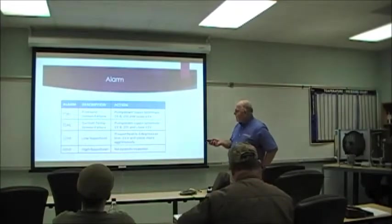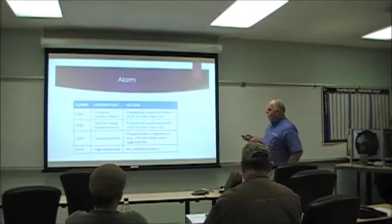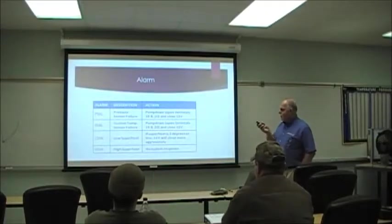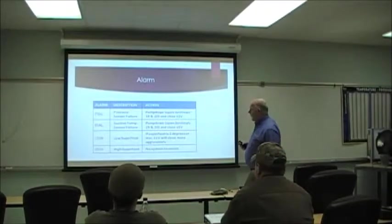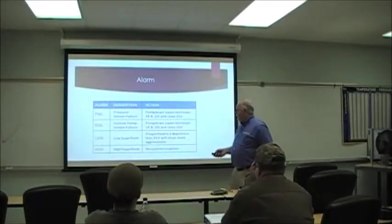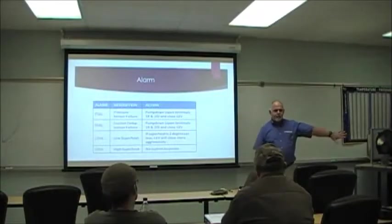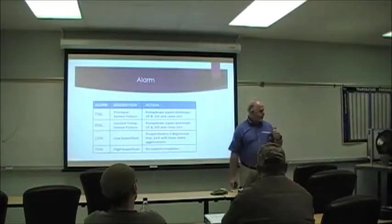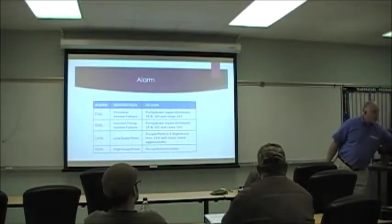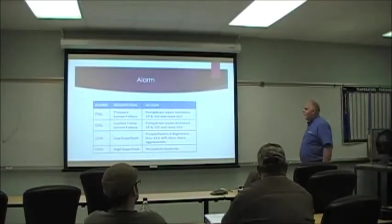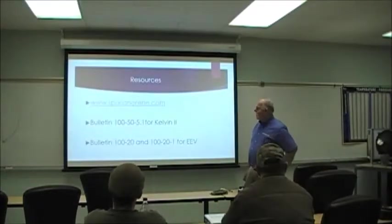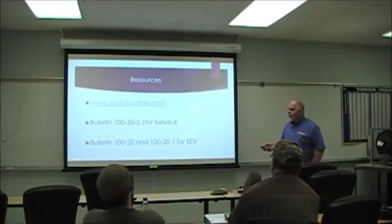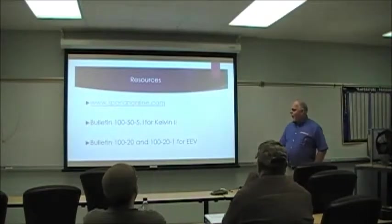These are some alarms. Sheet 2 tells you what alarm you get and what happens. The first two — sensor failure or transducer failure for pressure — it goes into pump down mode to protect the compressor. If you have a low superheat condition, it goes into a super-hyperactive mode where it rapidly closes to get the superheat up — because we want superheat to protect the compressor. And a high superheat just gives you an alarm out but no response.